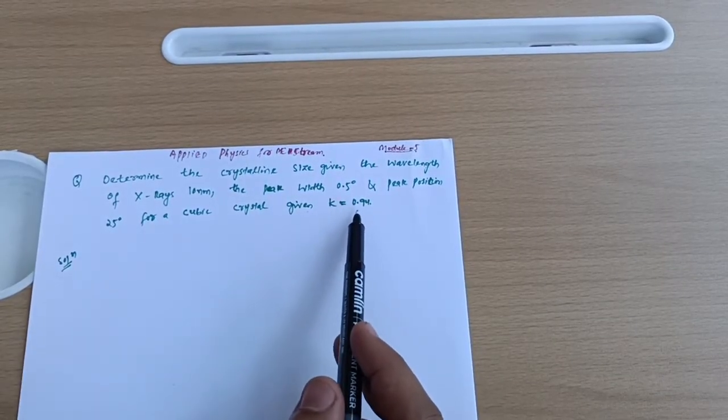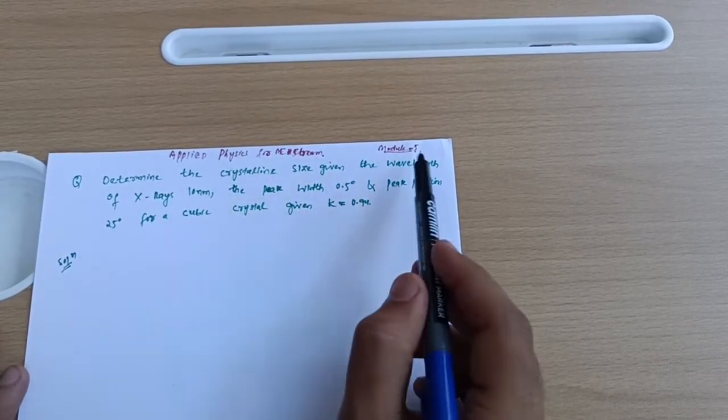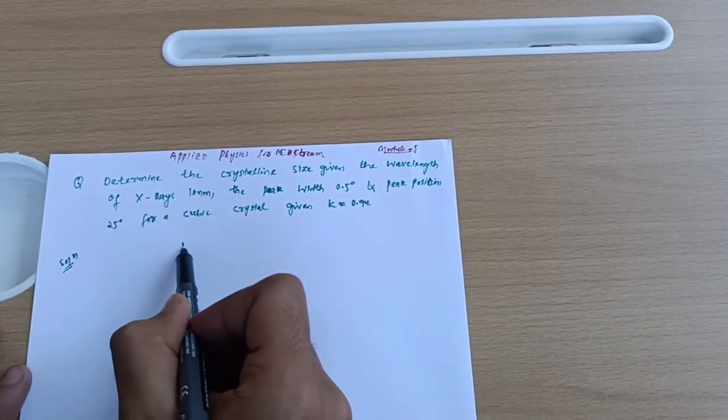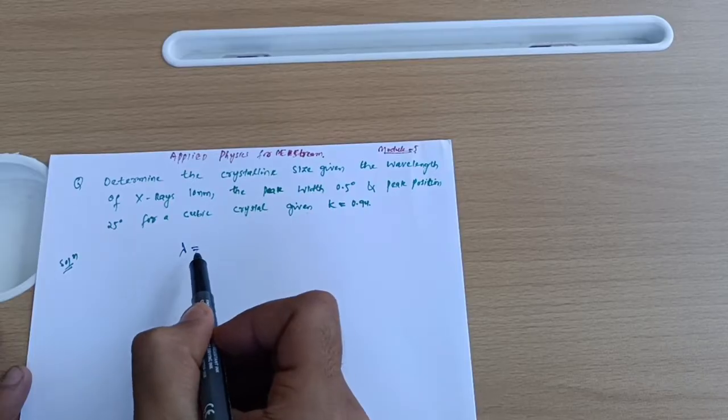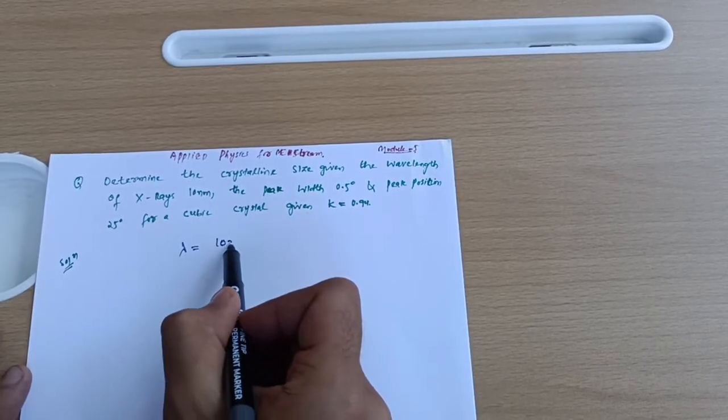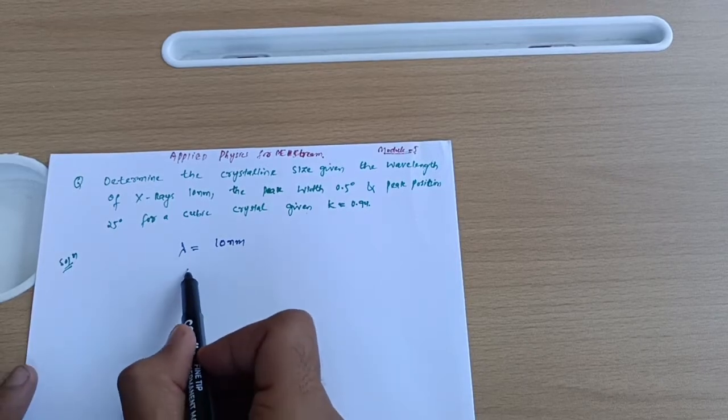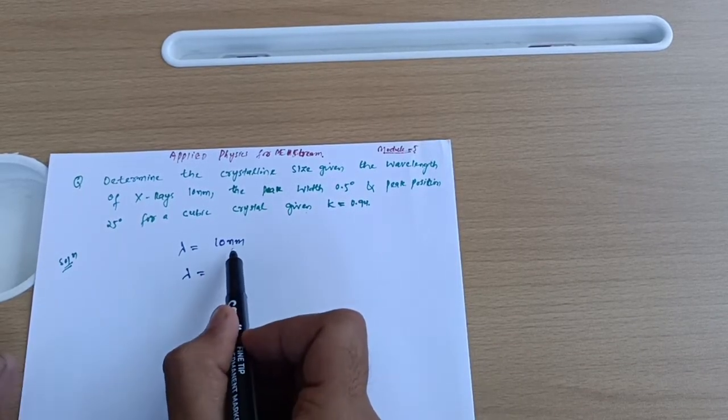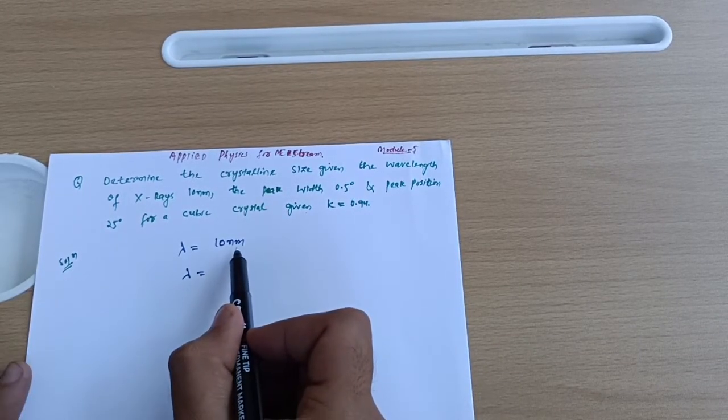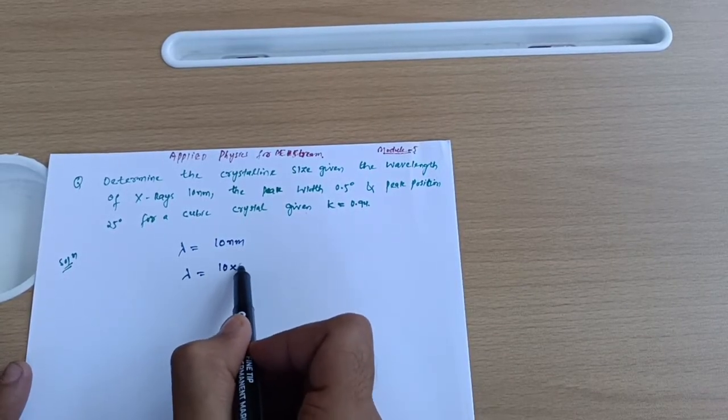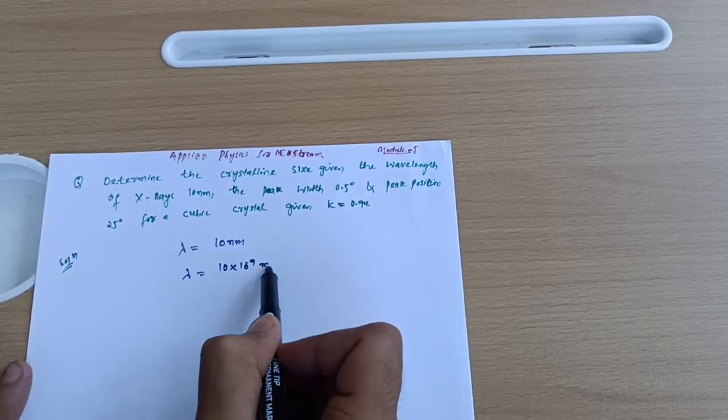We denote wavelength by lambda (λ). It is 10 nanometers, but we have to take it in terms of meters. One nanometer equals 10 raised to power minus 9 meters, so I can write 10 × 10^-9 meters. Lambda equals this much.